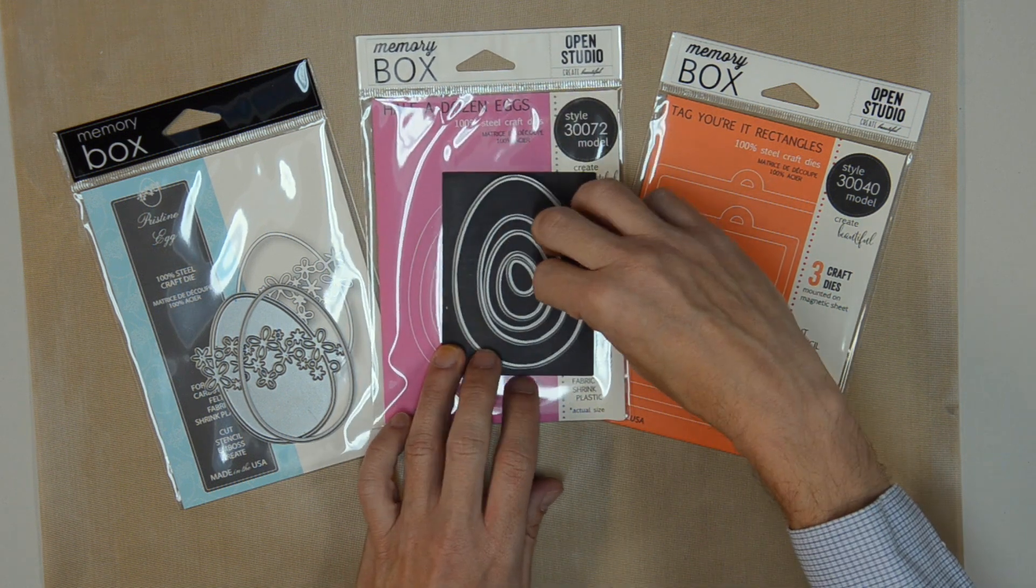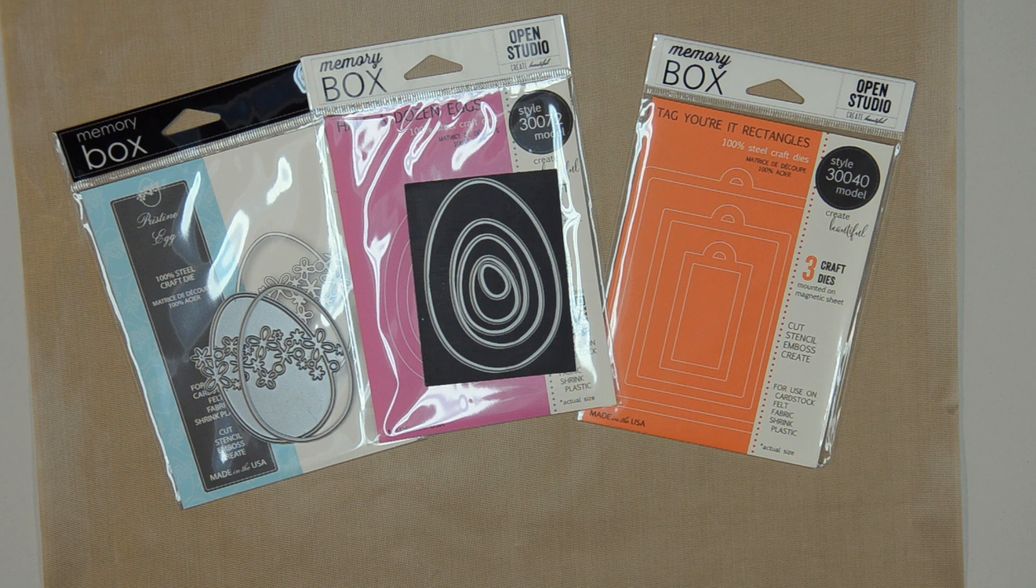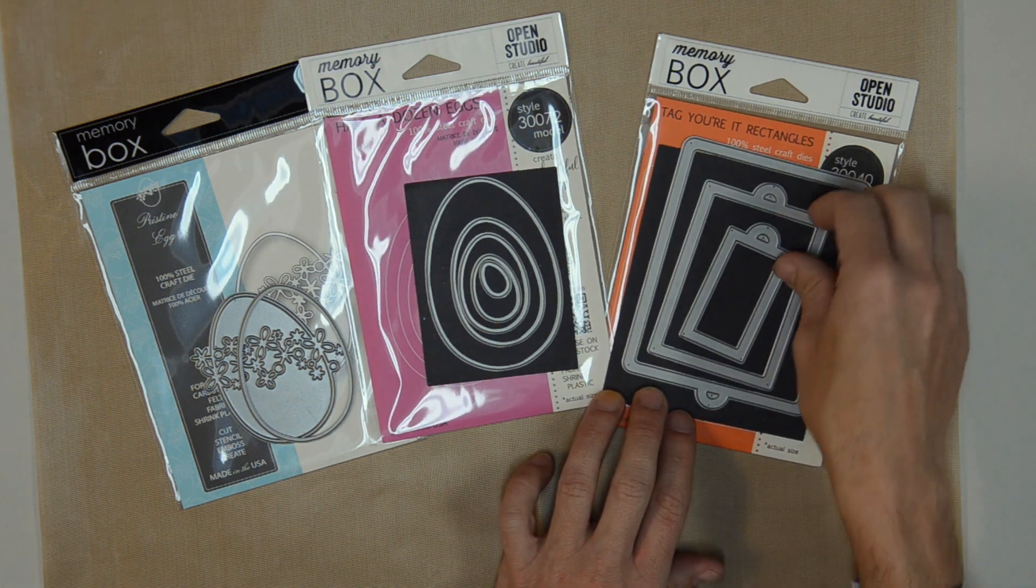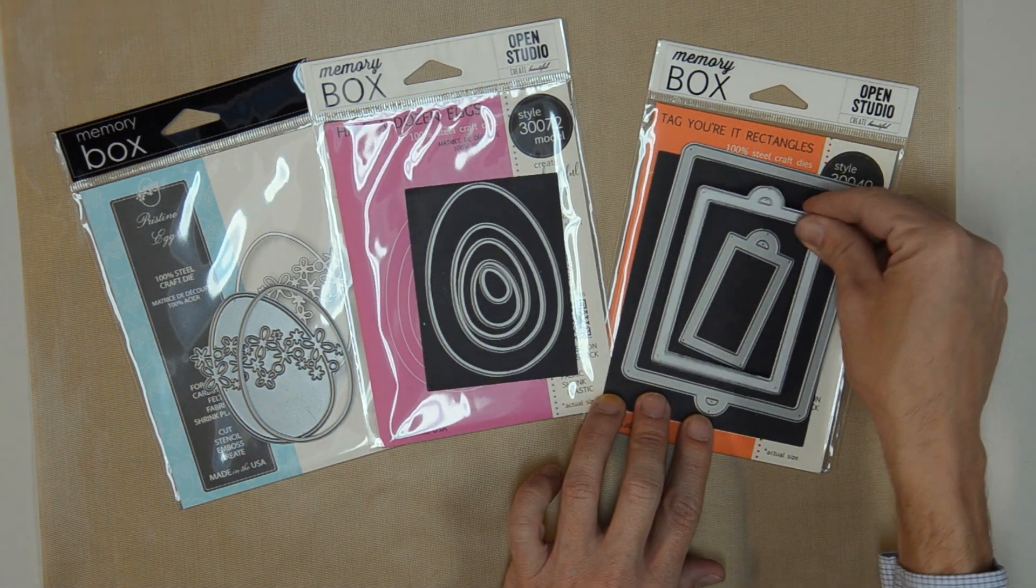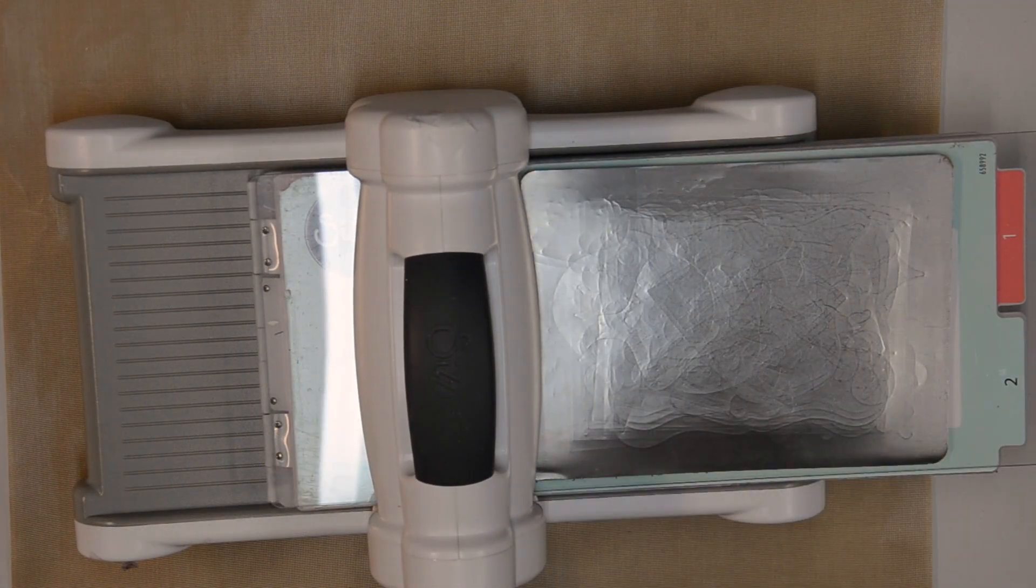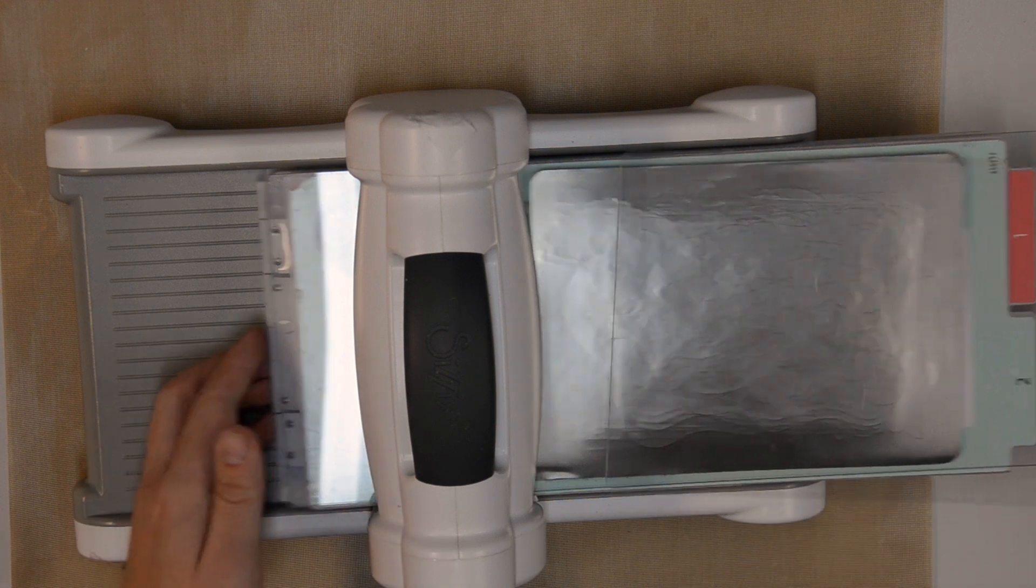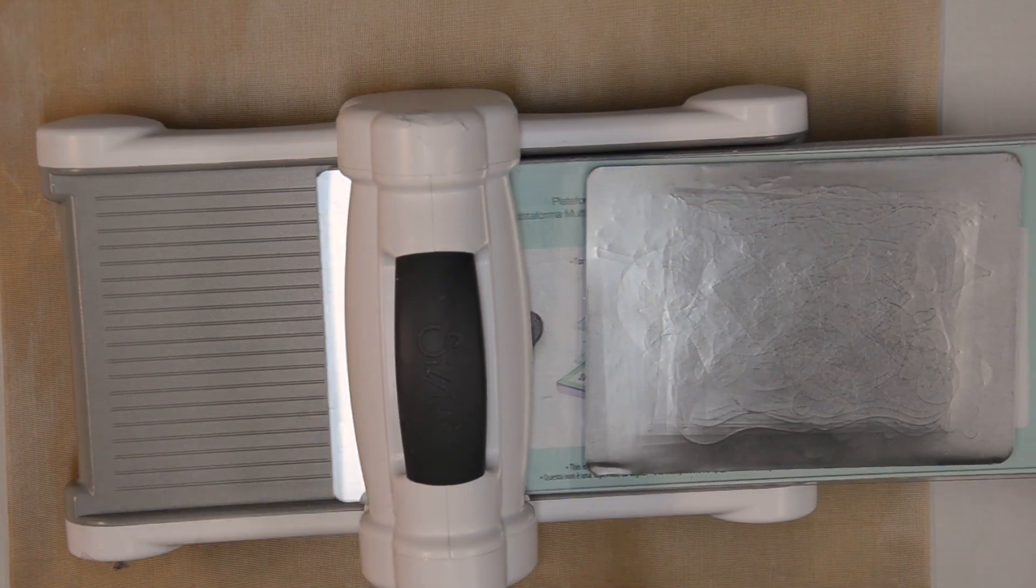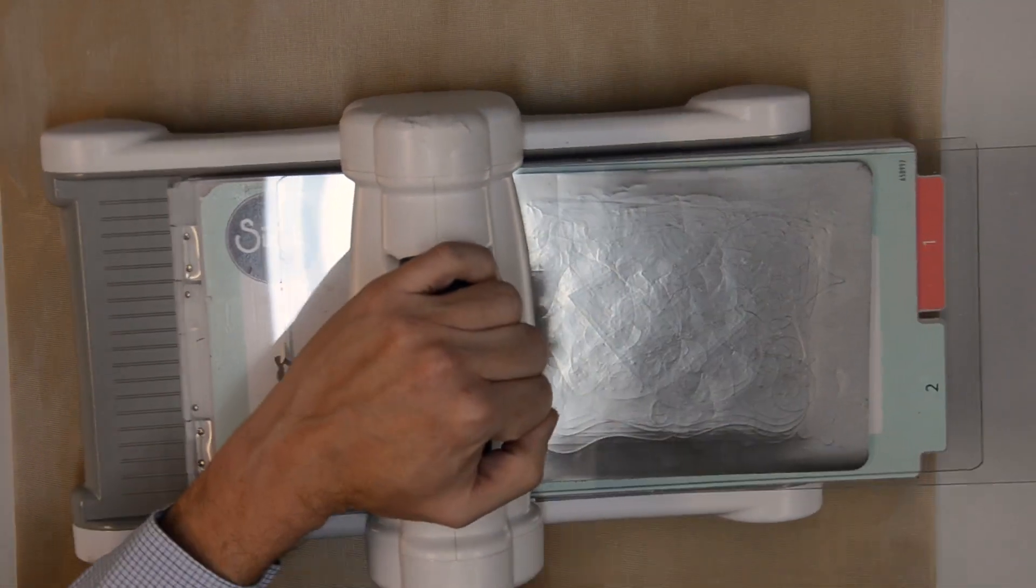We're also going to be using the Tag Your It Rectangles from Open Studio, which makes three fun tags that you can use as tags or as embellishments on a card. When I run the pristine egg through my die cut machine, I'm going to use a metal adapter plate. There's some fine detail on the pristine egg die, and the metal adapter plate makes it cut like butter.